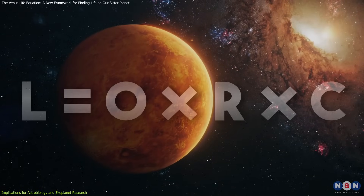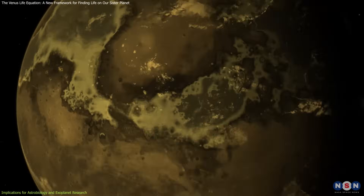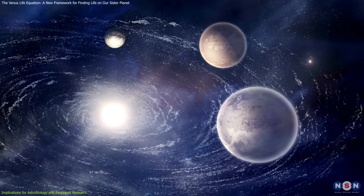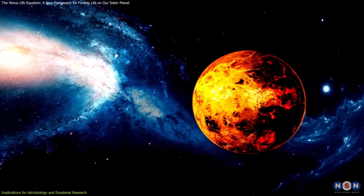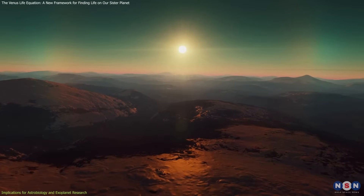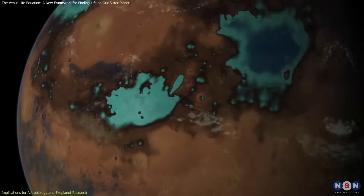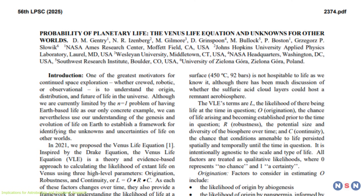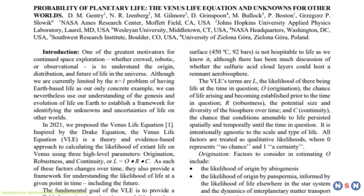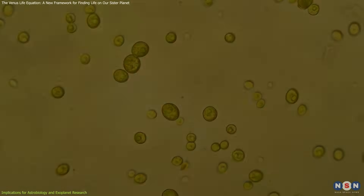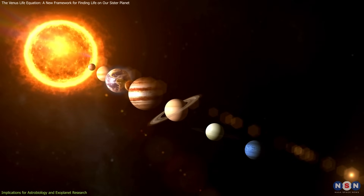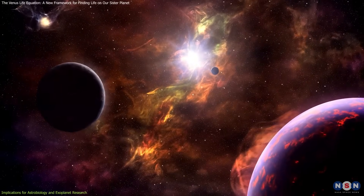One particularly valuable aspect of the VLE is how it accounts for habitability changing over time. Many exoplanet studies focus on whether a planet is currently in its star's habitable zone. But the VLE reminds us that a planet's history matters — Venus might have been habitable for billions of years before becoming uninhabitable. This raises important questions: Are such transitions common? Could many exoplanets follow Venus's trajectory? The VLE also expands our concept of habitable environments. If life could persist in Venus's clouds despite hostile surface conditions, we might need to consider atmospheric biospheres on other worlds as well. This could redefine what we classify as potentially habitable planets.